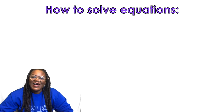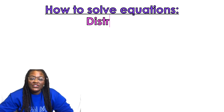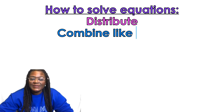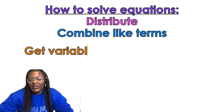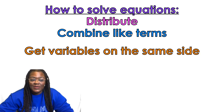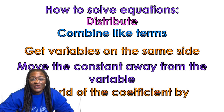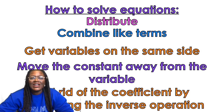How to solve equations. The first thing you're going to do, if you can, is distribute. Then you're going to combine like terms. You're going to get your variables on the same side. Then you're going to move the constant away from the variable, and then get rid of the coefficient by performing the inverse operation. That's a lot of words, but we're doing them.